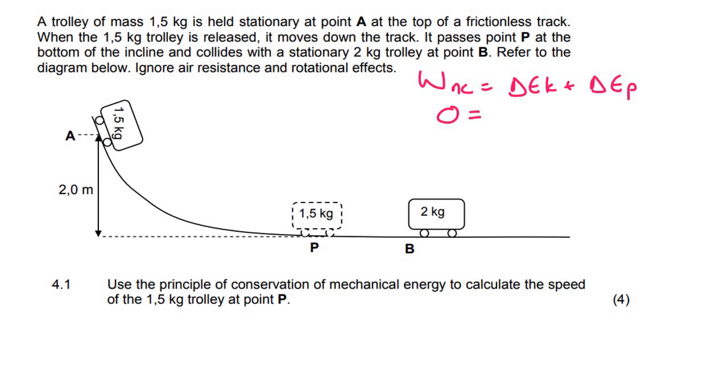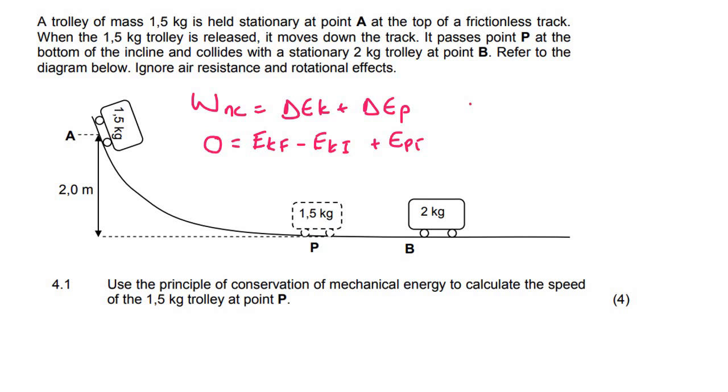So you're going to say zero is equal to delta EK. Now remember that delta EK is EK final minus EK initial plus delta EP which is EP final minus EP initial.